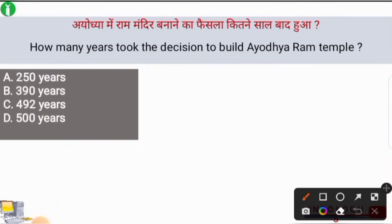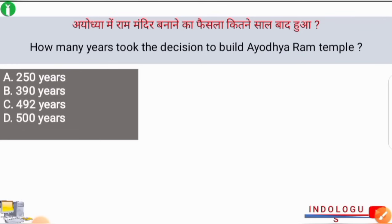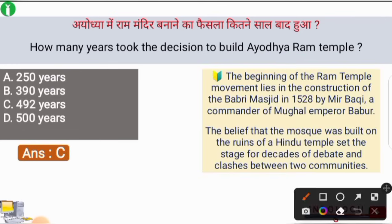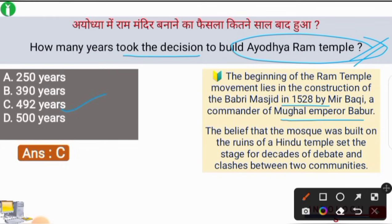How many years did it take for the decision to build the Ayodhya Ram Mandir? The correct answer is option number C, i.e. 492 years. After 492 years, the decision was taken to build the Ayodhya Ram Mandir. The beginning of the Ram Temple movement lies in the construction of Babri Masjid in 1528 by Mir Baqi, a commander of Mughal Emperor Babar. The belief that the mosque was built on the ruins of a Hindu temple set the stage for decades of debate and clashes between the two communities.